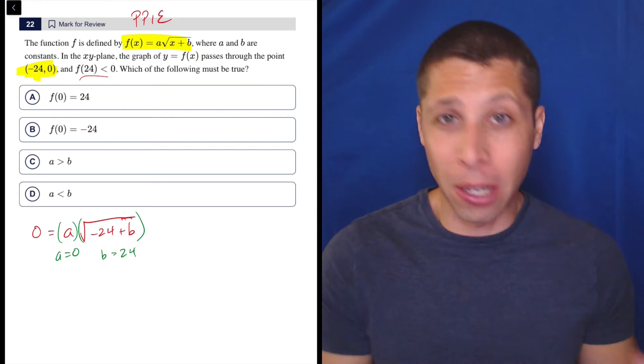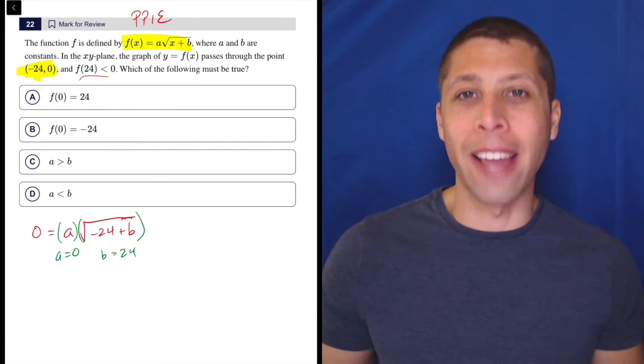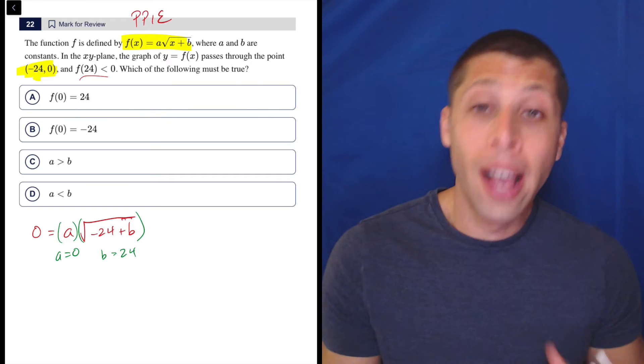Or B could be 24, because negative 24 plus 24 is 0. And then square root of 0 is 0. And again, it knocks everything out. So there's two possibilities. So hey, that's pretty good.